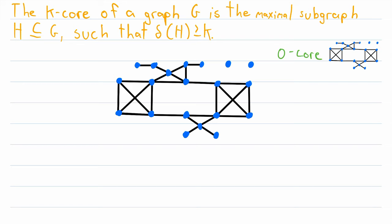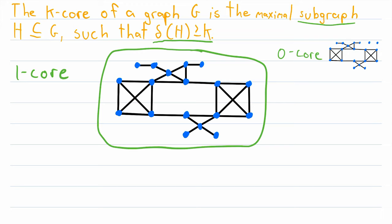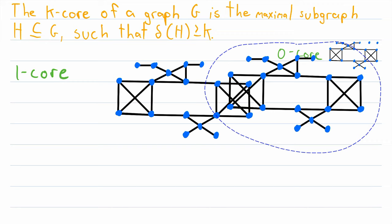Now let's look at the one-core of this graph. By definition, the one-core is the maximal subgraph such that the minimum degree of that subgraph is greater than or equal to one. Since every vertex must have degree one or greater, we only have to worry about vertices with degree zero — we only have to get rid of the isolated vertices. If we go ahead and erase those isolated vertices, what we have now is a subgraph where no vertex has a degree less than one.